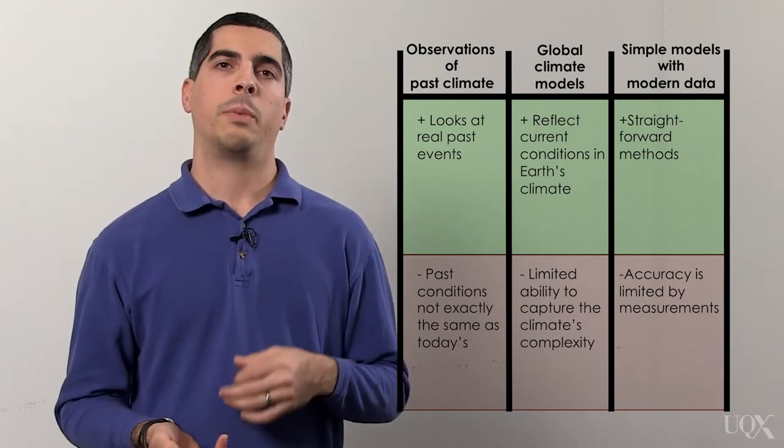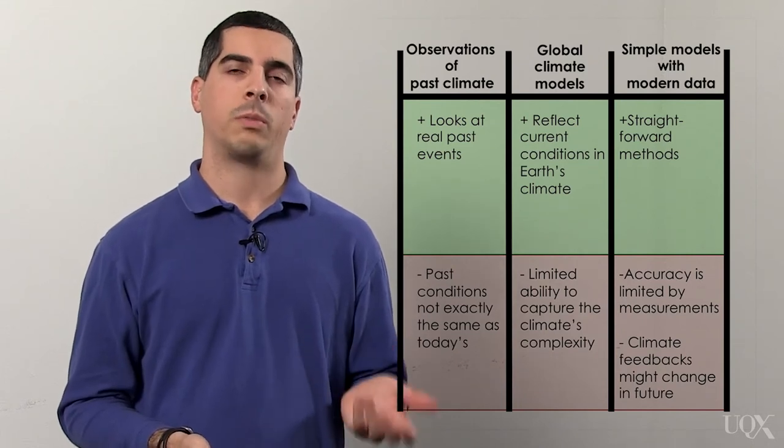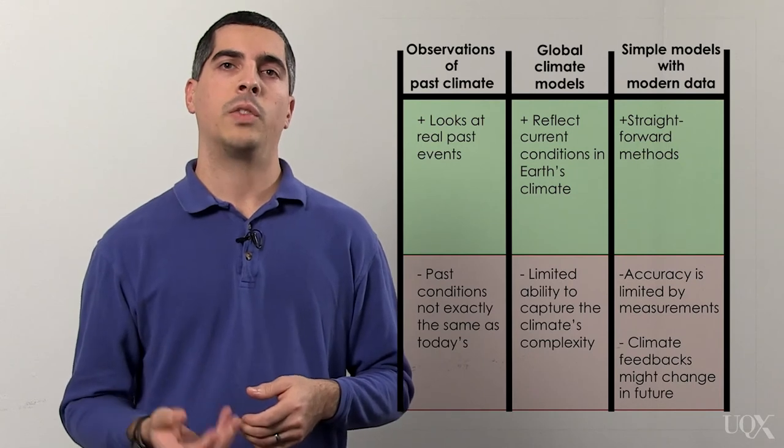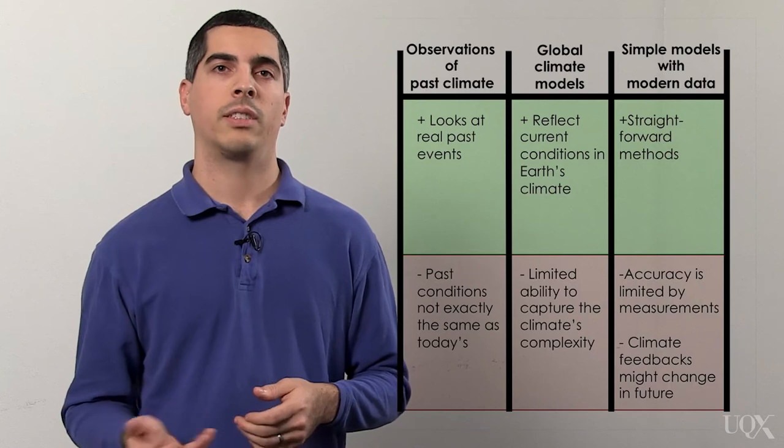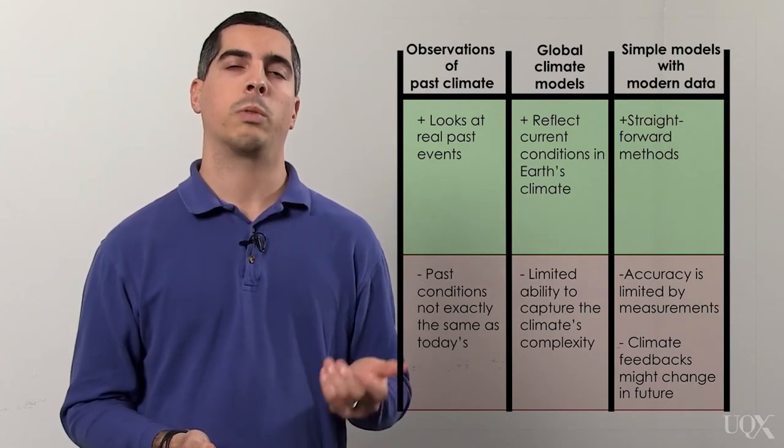Another weakness with this method is that we don't know if the climate feedbacks will behave the same way in a hotter world decades from now as they do today. Scientists using this method assume that's true, but it might not be. Climate models suggest it's not. And if it's not, estimates using modern measurements with simple models would be wrong.